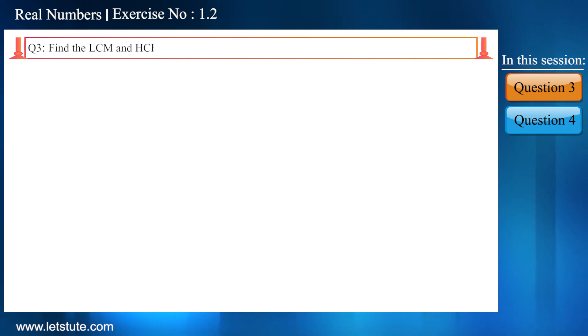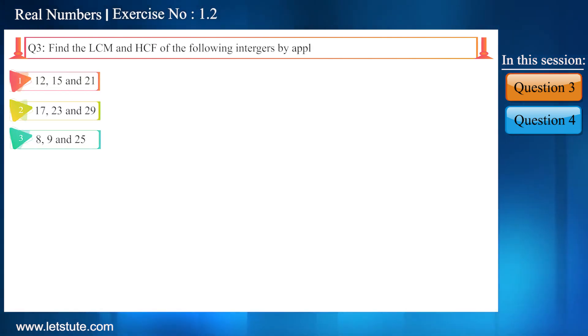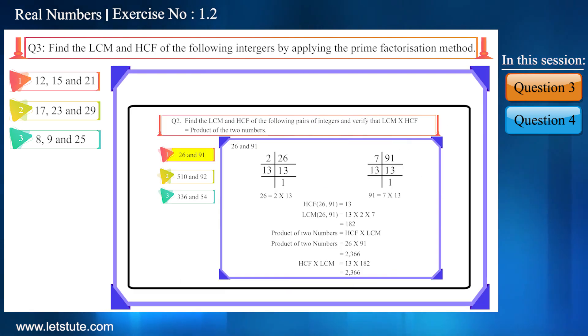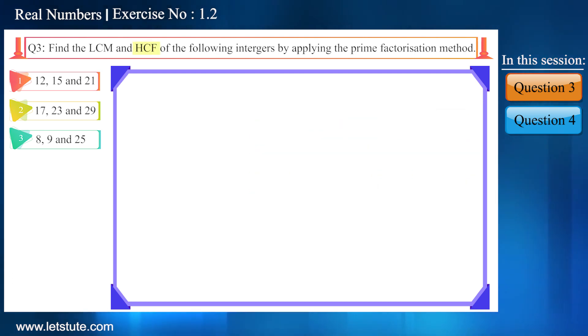Find the LCM and HCF of the following integers by applying the prime factorization method. Friends, we solved the same type of question in our previous video, but there we had to find HCF and LCM of two numbers. But here we have to find HCF and LCM of three numbers using the same method, that is prime factorization method.